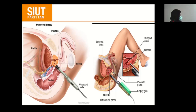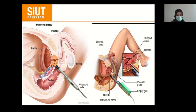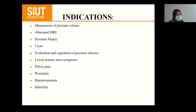This diagram shows the patient positioned in the left lateral position with the hip flexed and the probe inserted, and the volume of the prostate is taken. This also shows how a biopsy is taken from the prostate. Indications for transrectal ultrasound: measurement of prostate volume, abnormal DRE, prostatic biopsy, evaluation of prostatic cyst or seminal vesicle cyst, evaluation and aspiration of prostatic abscess, recurrent lower urinary tract symptoms, pelvic pain, prostatitis, haematospermia, and infertility.